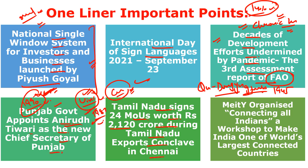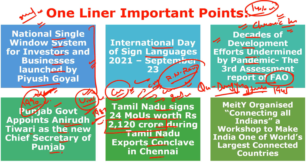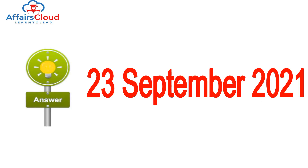Tamil Nadu signed 24 MOUs worth rupees 2,120 crore during the Tamil Nadu Exports Conclave in Chennai. Tamil Nadu's Chief Minister is MK Stalin and the new Governor is RN Ravi, who was earlier the Governor of Nagaland. The earlier Governor of Tamil Nadu was Banwari Lal Purohit, who is currently the Governor of Punjab. The Ministry of Electronics and Information Technology organized the 'Connecting All Indians' workshop to make India one of the world's largest connected countries, enabling rural people to connect with internet services.